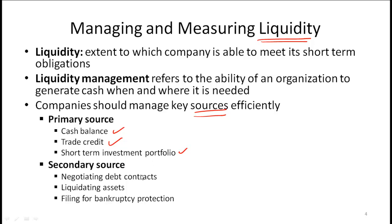Secondary sources of liquidity include negotiating debt contracts with a bank or another entity. Another possibility is liquidating assets, which is generally not desirable. Typically a last resort is filing for bankruptcy protection, which is not a good situation to be in.